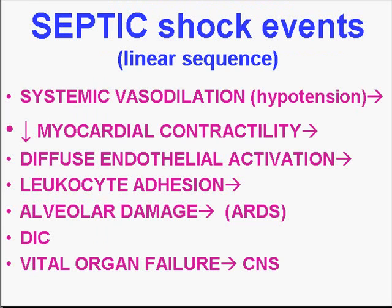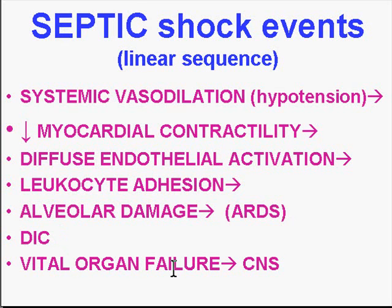If you want to look at a linear sequence of events in septic shock — and remember, you have to have one before you can have the other. It starts out as systemic vasodilation or pooling, which by itself should cause hypotension, followed by decreased myocardial contractility, followed by diffuse endothelial activation. When the endothelium is activated, Dr. Jekyll becomes Mr. Hyde, and now you have all kinds of reasons for coagulation and inflammation: leukocyte adhesion to the endothelium, alveolar damage in the lungs, DIC, and ultimately multiple vital organ failure — the last of which is usually the central nervous system.